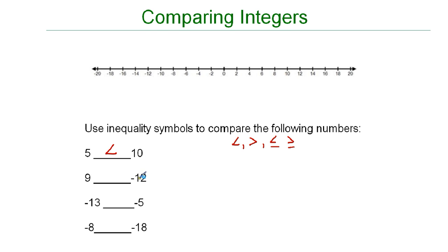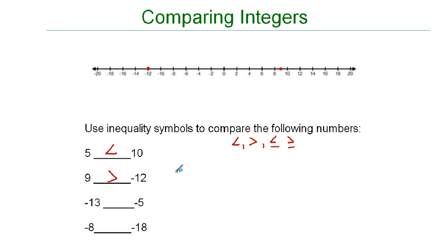We can also compare positive and negative numbers. Here we have 9 and negative 12. Whenever you're comparing a positive number with a negative number, the positive number is always greater. Positive numbers are always greater than negative numbers, so 9 is greater than negative 12.